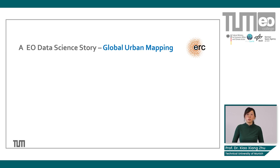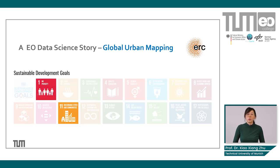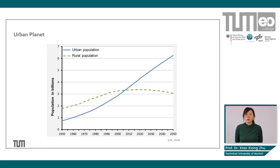This is mostly related to two UN Sustainable Development Goals: number one, No Poverty, and number eleven, Sustainable Cities and Communities. As you might know, we are living on an urban planet, and this is the UN's figure regarding urban and rural population.